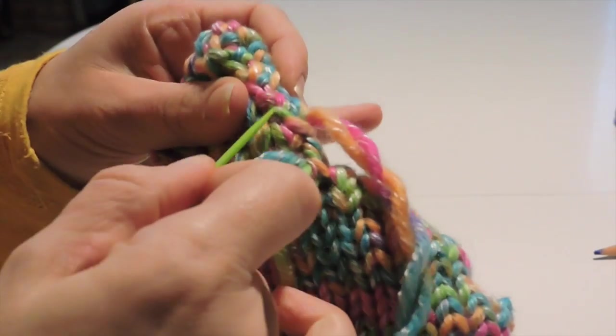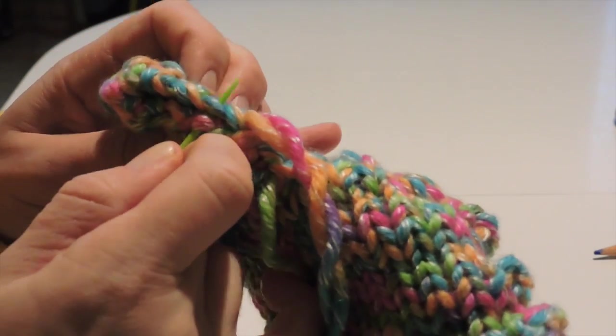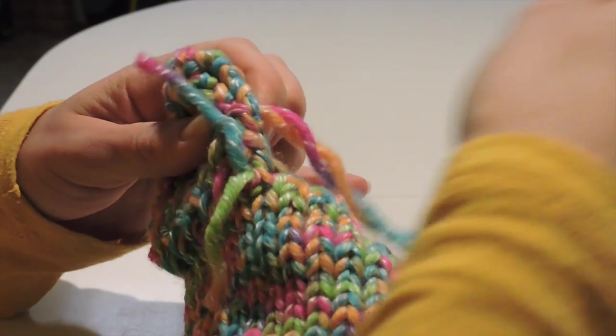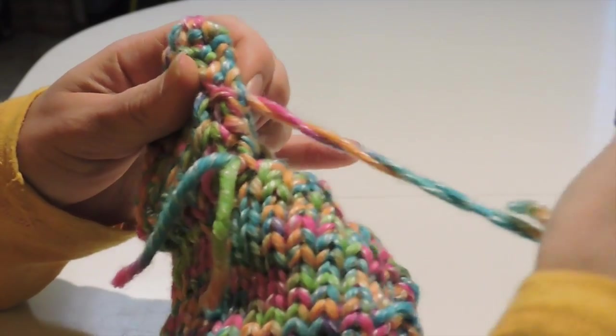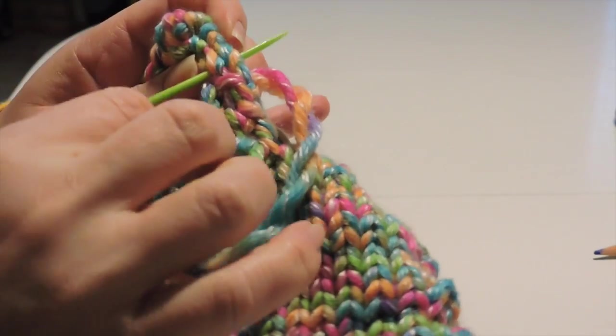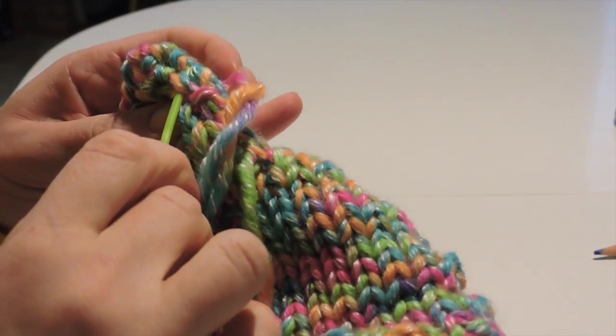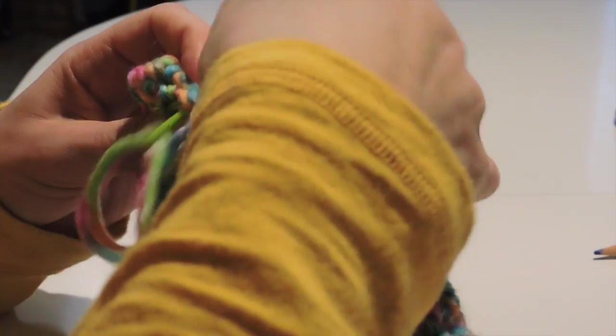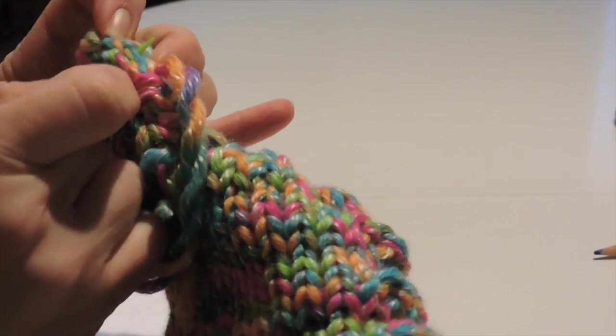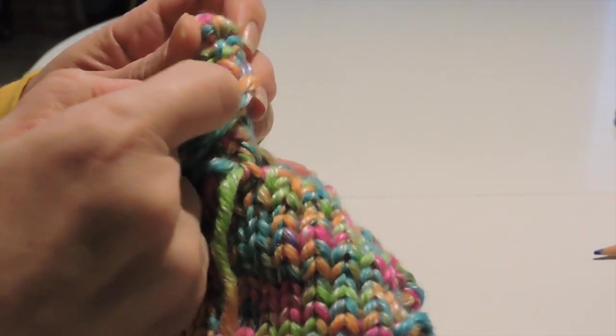With this yarn, you really can't tell anyway because it's so colorful, but just work neatly. Plus you don't want to stitch and make your thumb smaller, so you want to make sure you do it right here on the outside of the thumb stitches to get it just right. And just continue to do that all the way up so your thumb is sewn up.